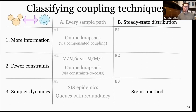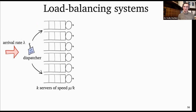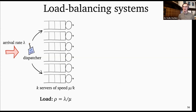Our next example has to do with load balancing systems. This is going to be a specific example of state space collapse and the drift method. The specific load balancing problem is: we're load balancing in a queuing system with exponential job sizes. We have some number of servers k, each with service rate μ/k. Jobs arrive at rate λ, giving system load ρ = λ/μ — the total arrival rate divided by the total service rate.